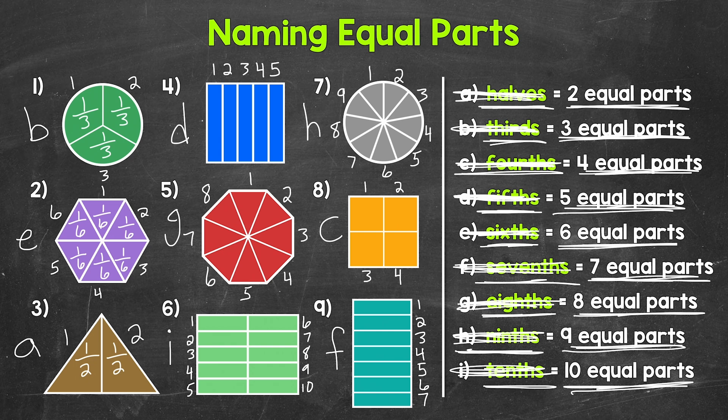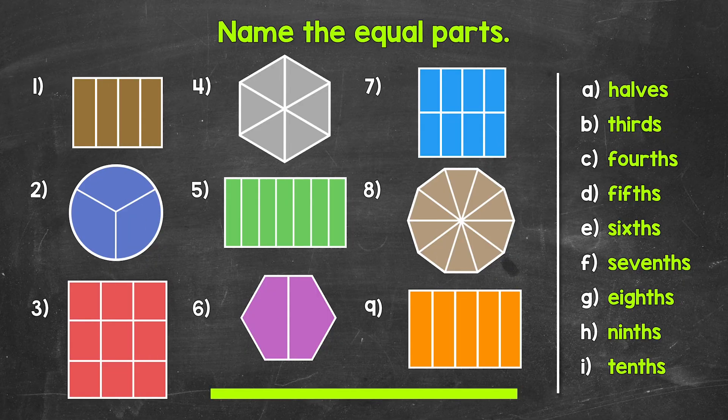Now that we've gone through some examples together, it's time for you to try some practice problems on your own. Have paper and a pencil ready. Name the equal parts — number your paper 1 through 9, and then write the letter of the correct name for the number of equal parts. Match the name to the correct number of equal parts. I'll give you two minutes, and then we will go over the answers. Go ahead and start.